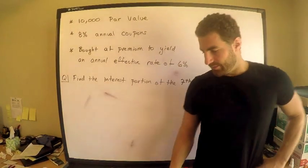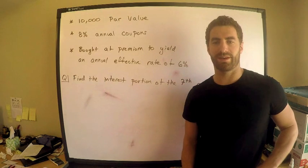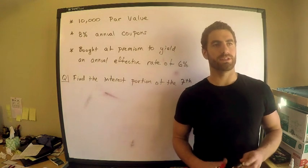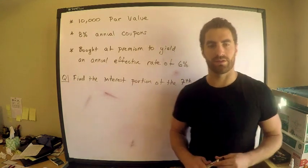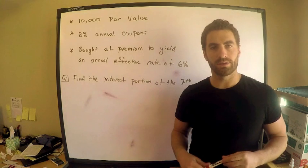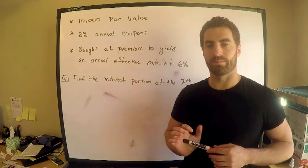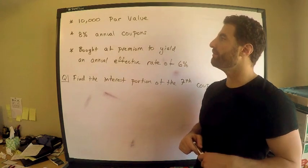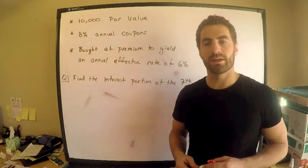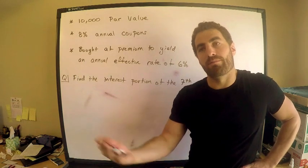I want to cover this example regarding bonds — not to be confused with James Bond, but the type typically a government bond or corporation bond. It's a way for the government to borrow money. How it works is an individual purchases a bond, giving the government money, and assuming there's a coupon rate, they pay us what are called annual coupons — payments in the form of money annually.